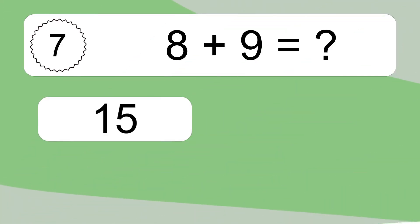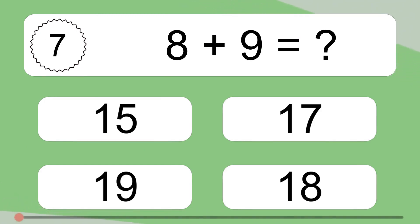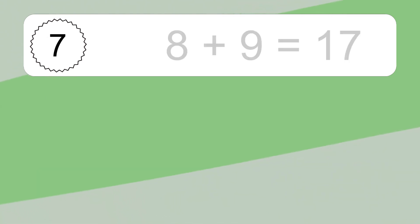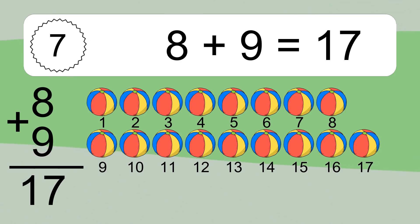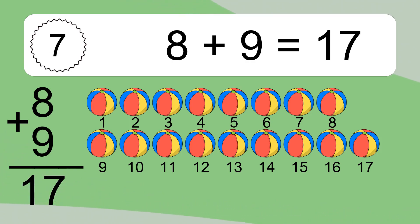8 plus 9 equals what? 8 plus 9 equals 17. Let's count it. 1, 2, 3, 4, 5, 6, 7, 8, 9, 10, 11, 12, 13, 14, 15, 16, 17.